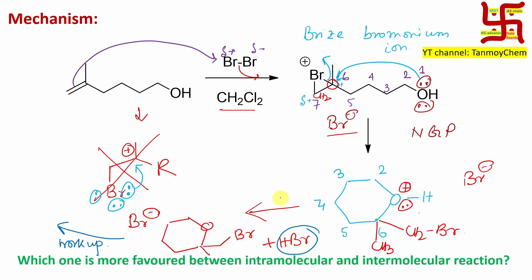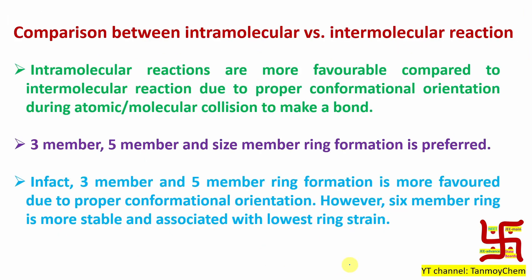But here, one question: why didn't Br- attack in an intermolecular reaction, whereas this OH attacks through NGP — neighboring group participation? Why does neighboring group participation get preference over an intermolecular reaction? Which one is more favored between intramolecular versus intermolecular reaction? Intramolecular reaction gets preference over intermolecular.